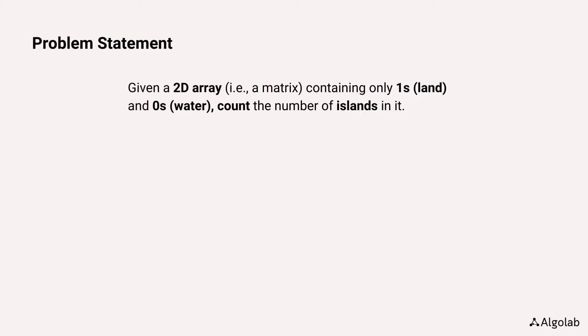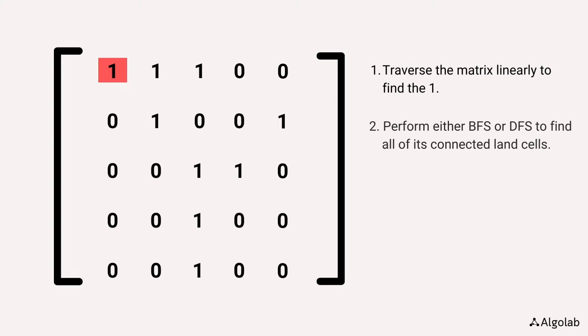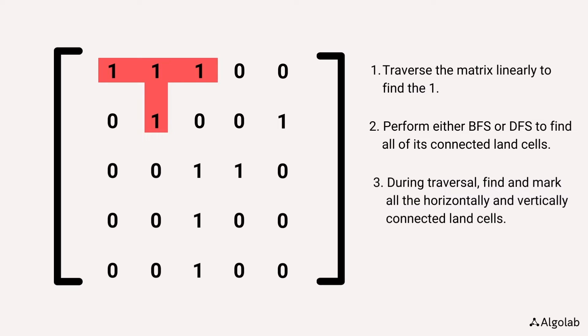To solve this problem, we can traverse the matrix linearly to find islands. Whenever we find a cell with value 1, we have found an island. Using that cell as the root node, we will perform a depth first search to find all of its connected land cells. During our traversal, we will find and mark all the horizontally and vertically connected land cells.